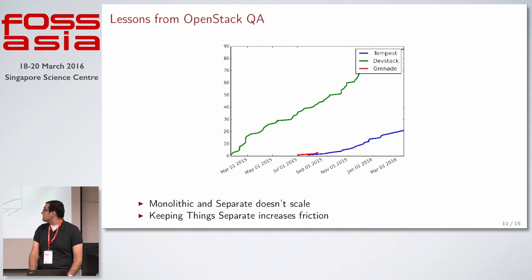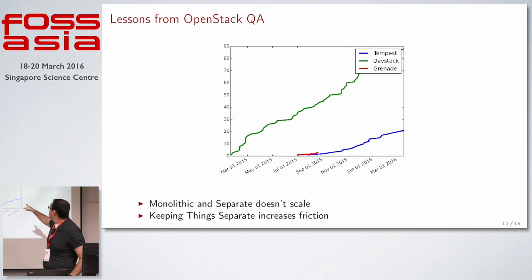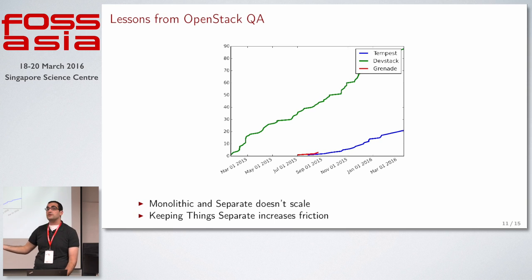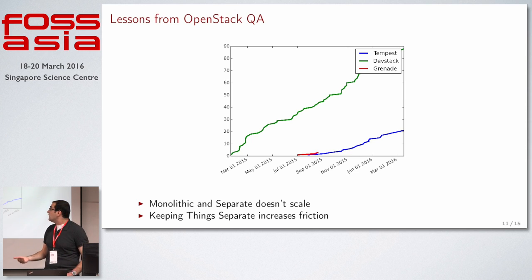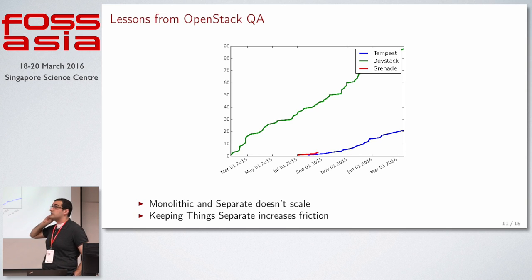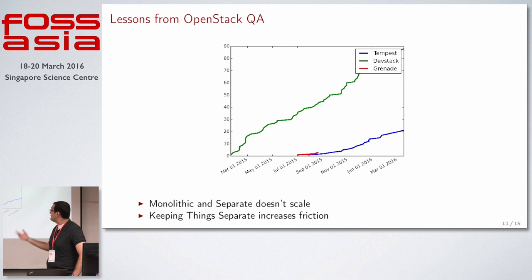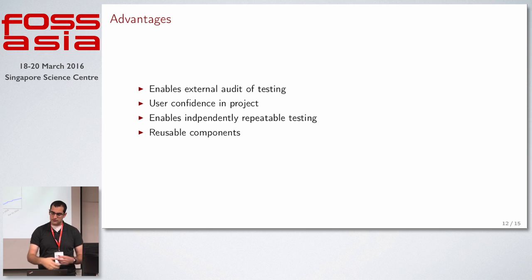This graph, which I spun up this morning, shows the growth of plugins for DevStack, Tempest, and Grenade since we introduced them. DevStack was the first project with a plugin interface — instead of trying to land a patch in DevStack where we have a core team of five people, you write a DevStack plugin now. In about a year we have almost a hundred plugins. Tempest was added a little later. Apparently people don't really care about upgrade testing their project because there are only three Grenade plugins, but Tempest is off to a pretty good start. This really shows that a monolithic, separate approach to testing doesn't scale well for a large community.